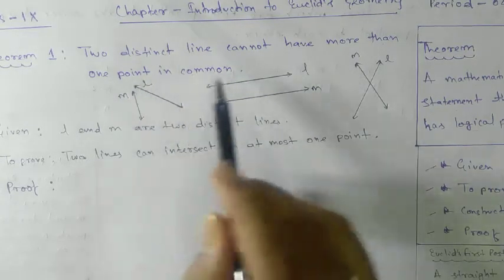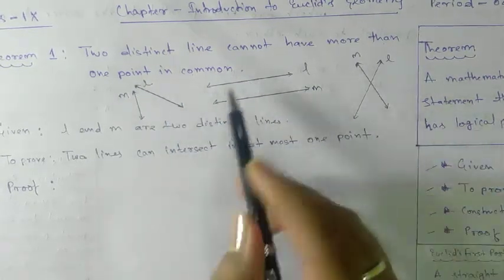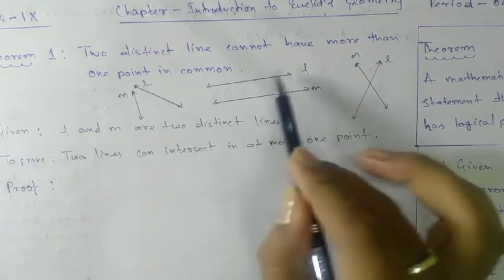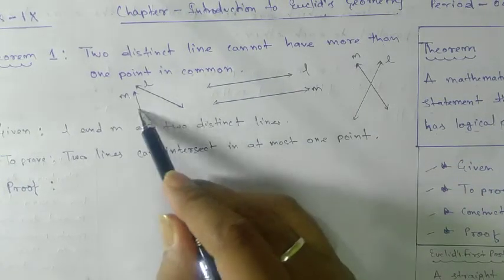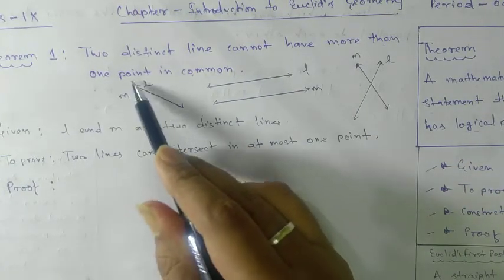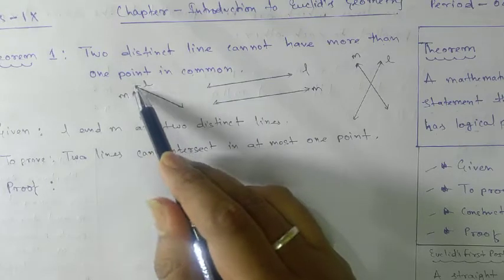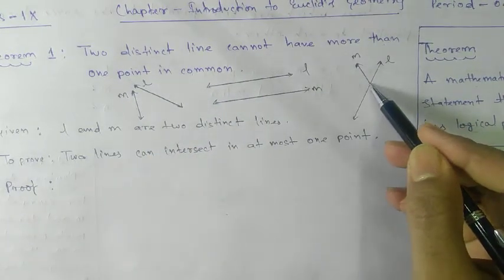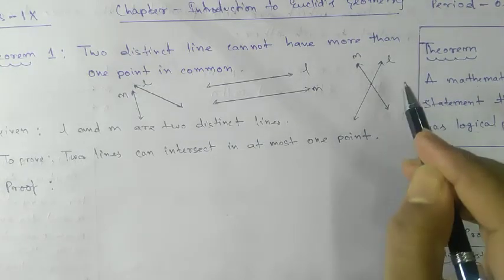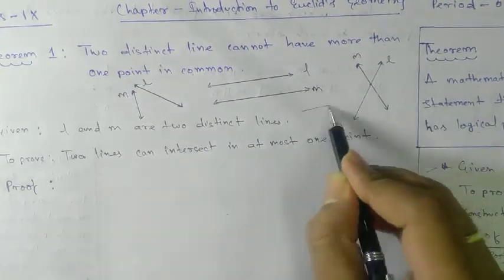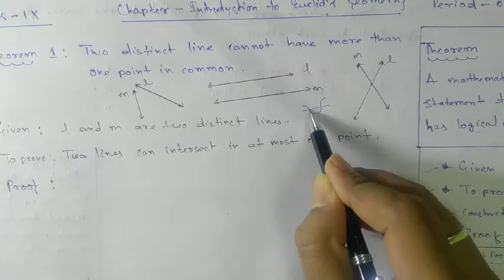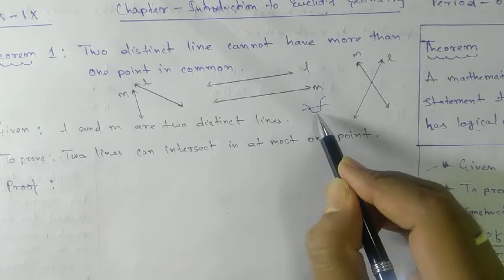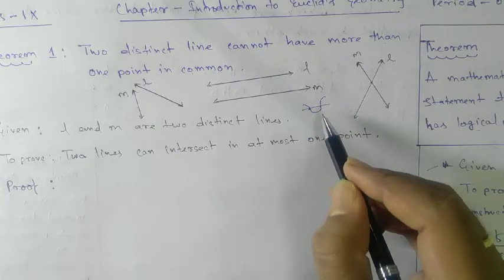There are three cases to consider. Parallel lines will never intersect, meaning you will never get a common point. Intersecting lines meet at one point, giving exactly one common point. If two lines had two common points, they would not be straight lines — they would form a curve.